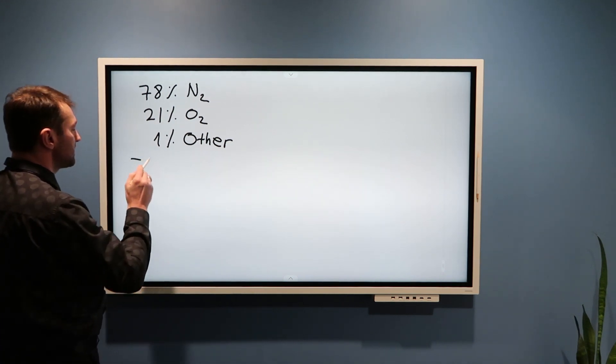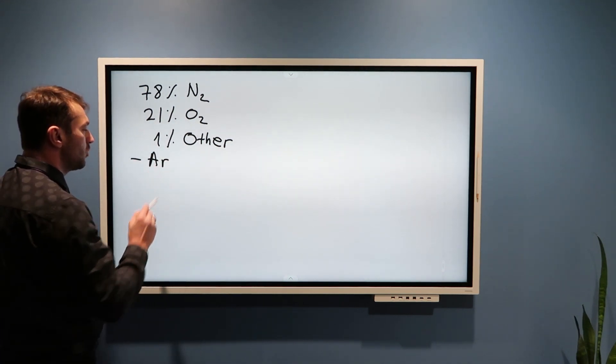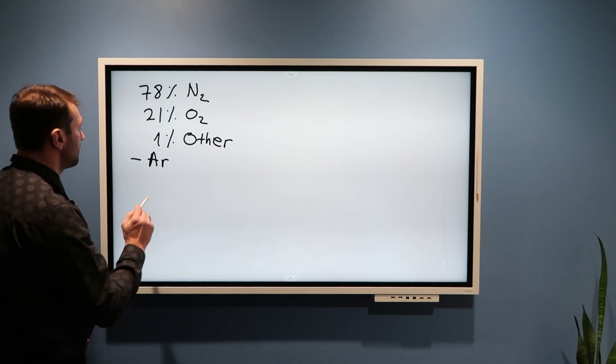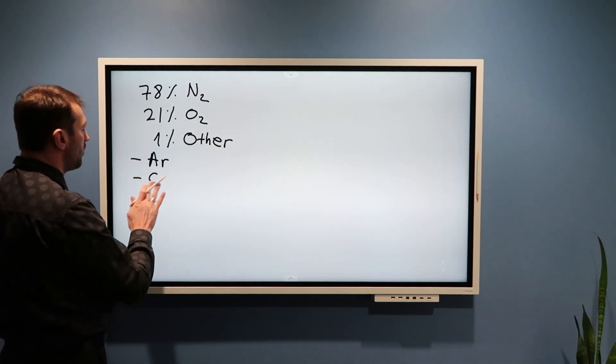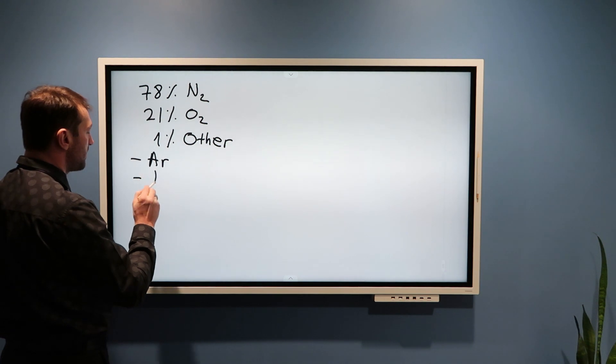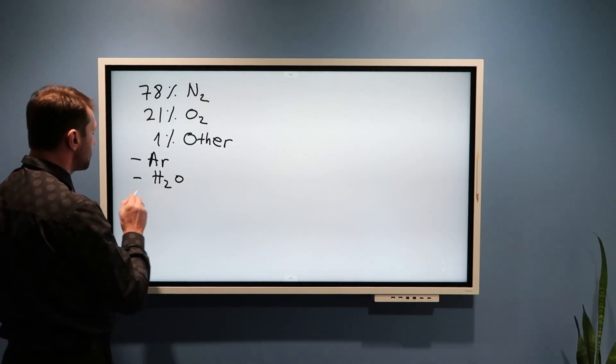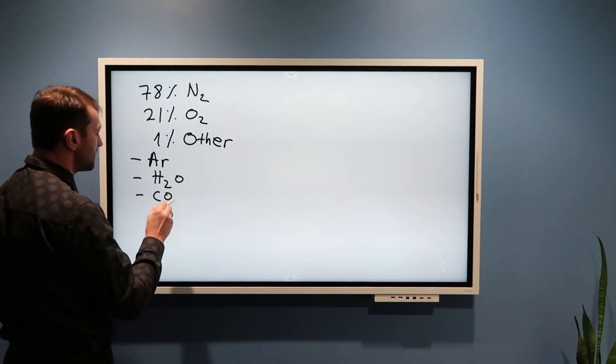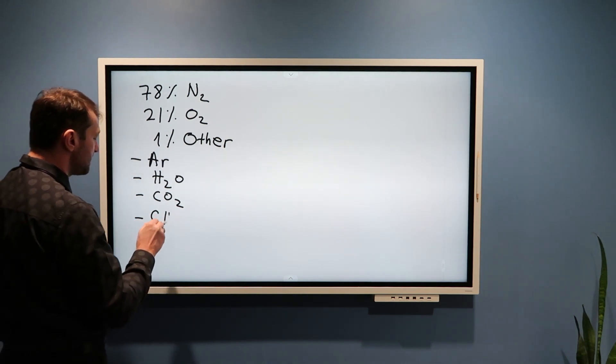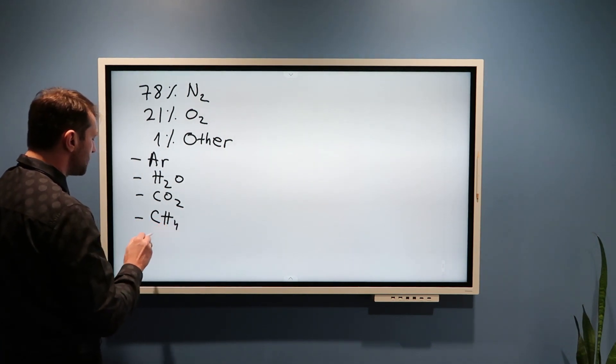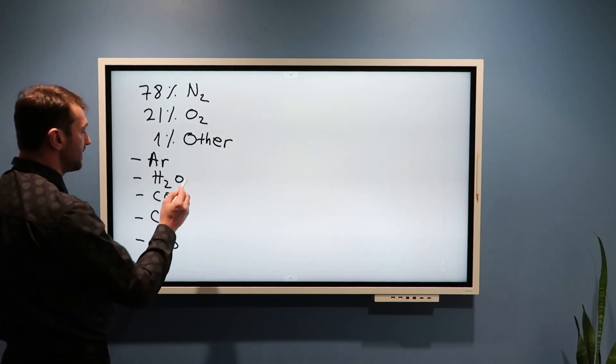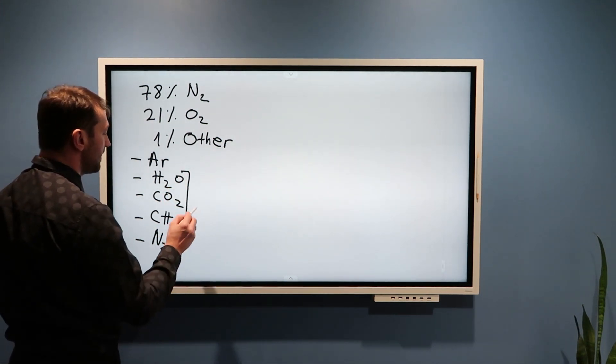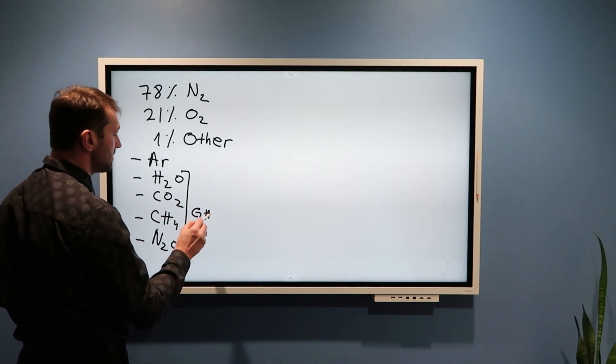These other gases are mostly argon, although it is not very important for weather, climate, or life. But then we have some important gases such as water vapor H2O, carbon dioxide CO2, methane CH4, as well as nitrous oxide N2O, the so-called laughing gas. These are also greenhouse gases.